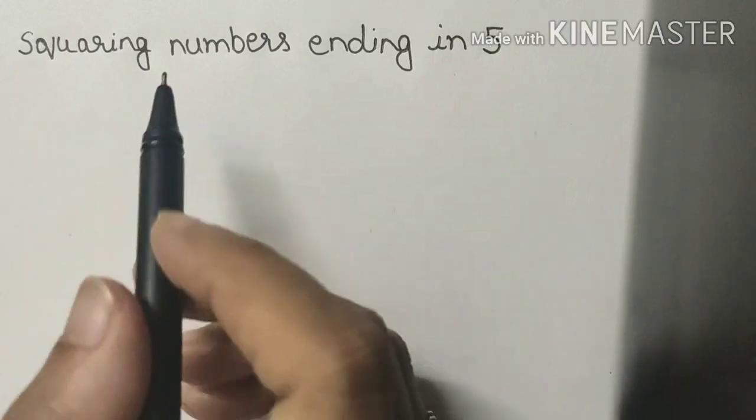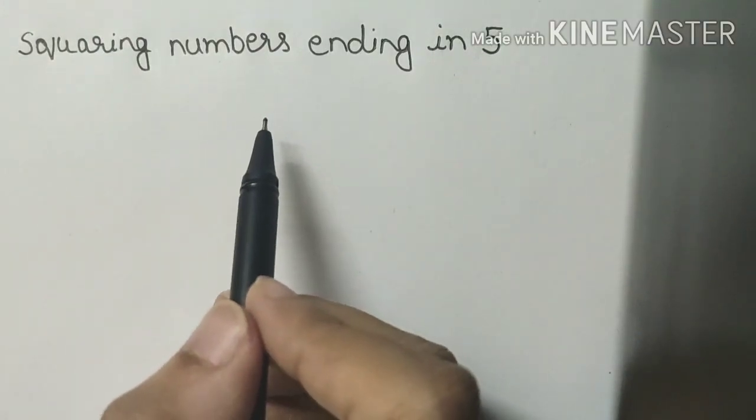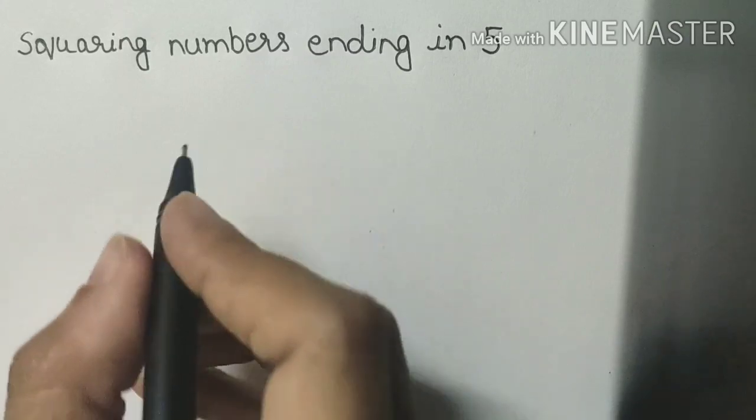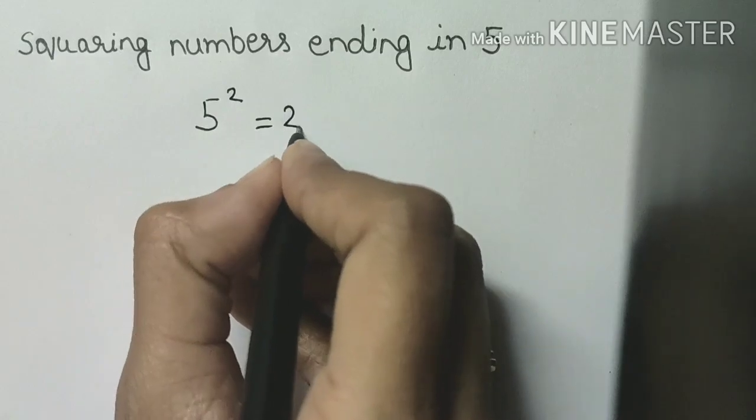So let's start with squaring numbers ending in 5. For this, you will have to remember a very simple thing: the square of 5 is 25.